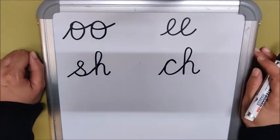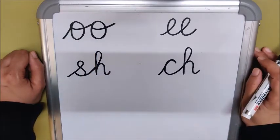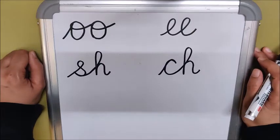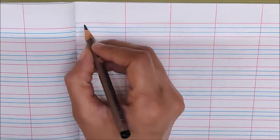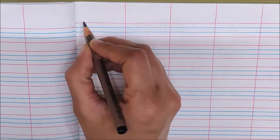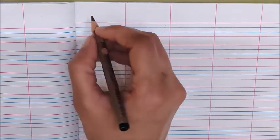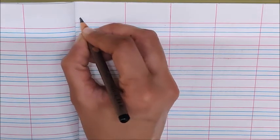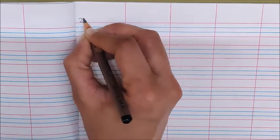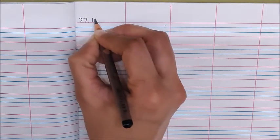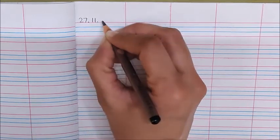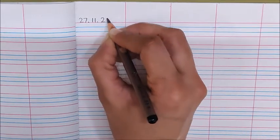Now children, it's time to take your English notebook and open a new page. Write the date here. Today is November 27 — 27.11.2020.